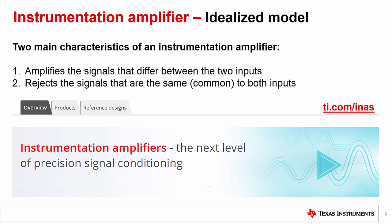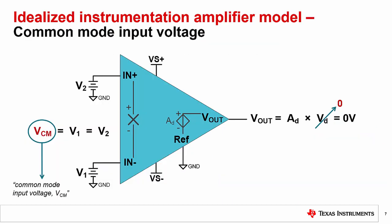In addition to amplifying the differential signal, IAs also reject the signals which are common to both inputs. We will now discuss what this means. Let us examine now a case where the inputs are equal to each other, and both are tied to a common mode input voltage, or VCM.